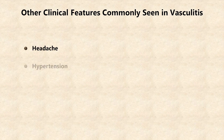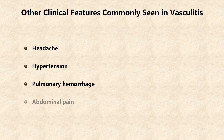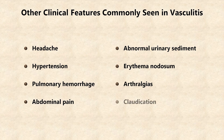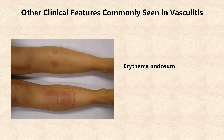In addition to these four clinical features, there are a variety of other features which are less specific but are also commonly seen in vasculitis. They include headache, hypertension, pulmonary hemorrhage without renal involvement, abdominal pain, abnormal urinary sediment, a skin condition called erythema nodosum which consists of multiple red, tender nodules on the shins, arthralgias, and claudication. Here's a picture of erythema nodosum.